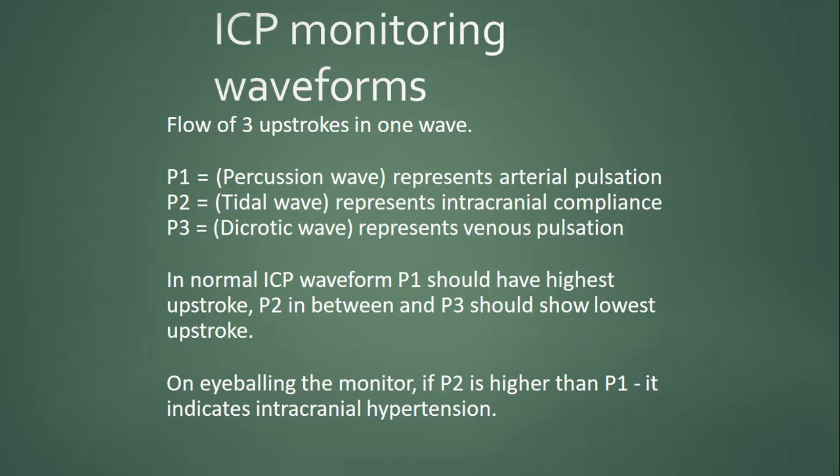ICP waveforms show three upstrokes per wave: P1, P2, and P3. P1 is the percussion wave representing arterial pulsation, P2 is the tidal wave representing intracranial compliance, and P3 is the dicrotic wave representing venous pulsation. In normal ICP, P1 is the highest, P2 is intermediate, and P3 is the lowest. If P2 is higher than P1 on the monitor, this indicates intracranial hypertension or raised ICP.